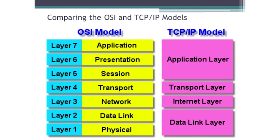TCP has some of the applications we talked about — HTTP, FTP — and those capabilities. It deals with its own session control and has all the same capabilities as layers 7, 6, and 5. It has a transport layer for TCP and UDP. Also know that in the TCP/IP model there are other transport layer options — most often those are routing protocols.